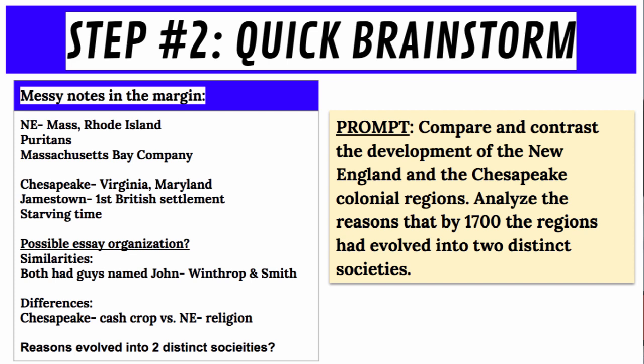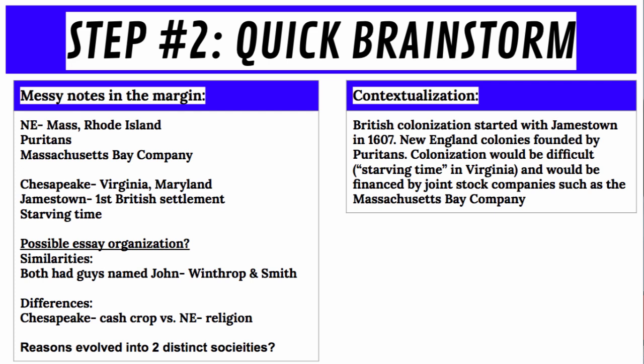The more organized you can make your brainstorming notes, the better off you are going to be. You will definitely come back to this brainstorm list after analyzing the documents and make revisions, but it's good to do a quick brain dump — one to two minutes max. By quickly brainstorming, you will more than likely come up with outside information and historical examples you can use to get points. Some of this info could be used to help you develop your contextualization. For example: British colonies started in 1607 with Jamestown, New England colonies were founded by Puritans, colonization was difficult, there were joint stock companies — this is the beginning of a solid contextualization that could earn you a point.